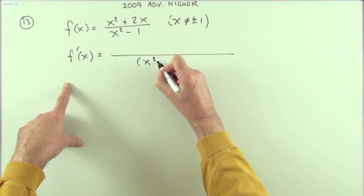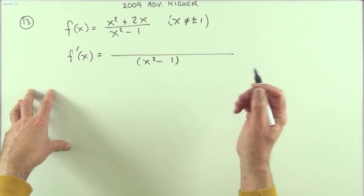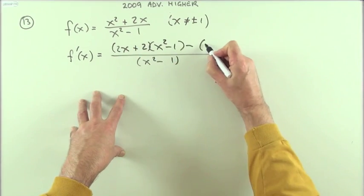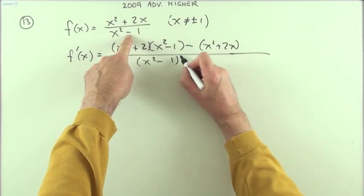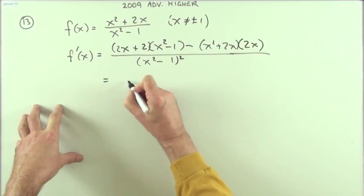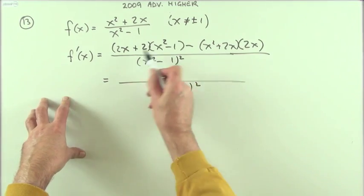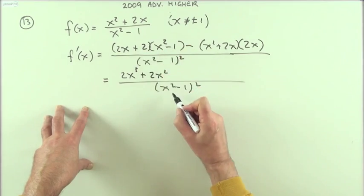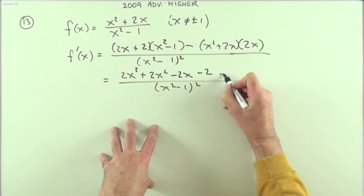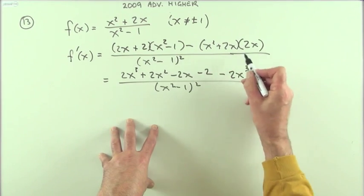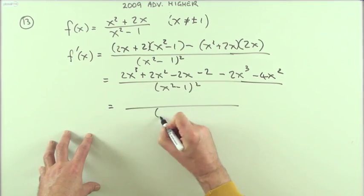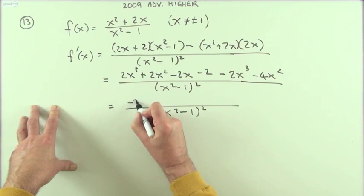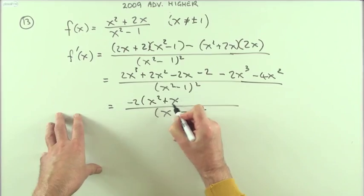That'll be the quotient rule then. Square the denominator, differentiate the top (2x + 2), multiply it by the denominator, minus leave the top alone (x² + 2x), multiply it by the derivative of that denominator (2x). So we're going to have 2x³ + 2x² - 2x - 2 minus 2x³ - 4x². The x³ groups go, and then I've got -2 of the x², -2 of the x's, and -2 for the number.